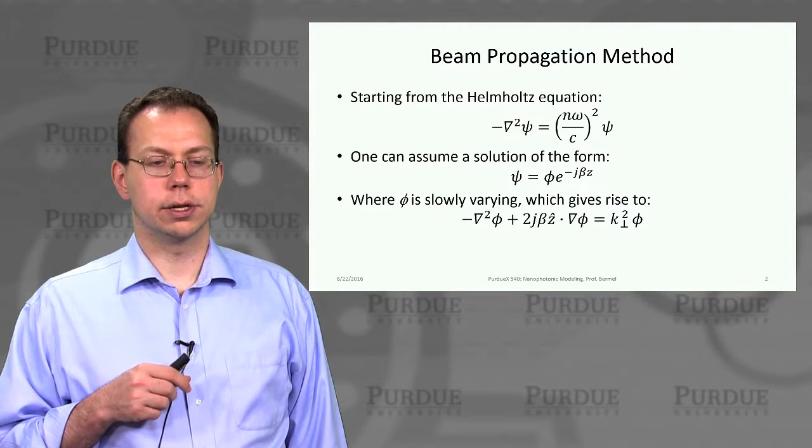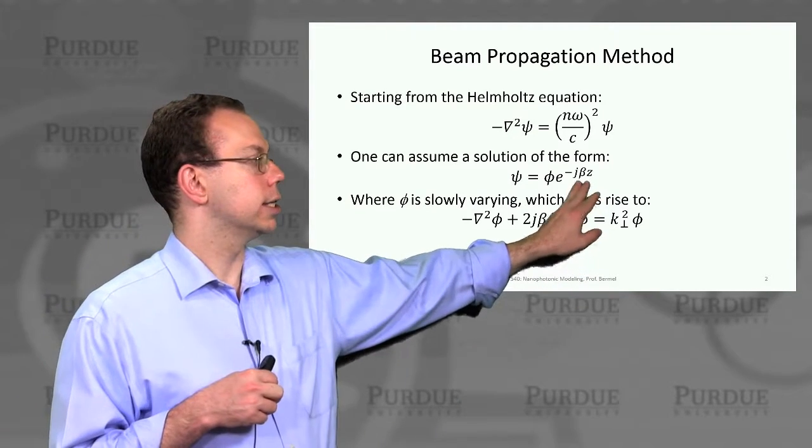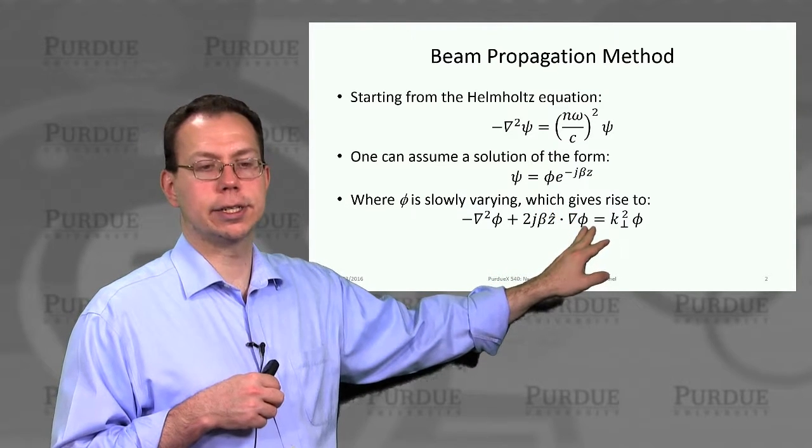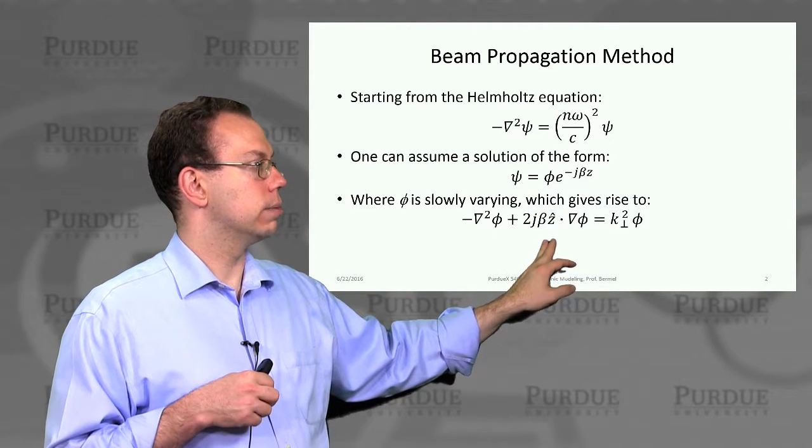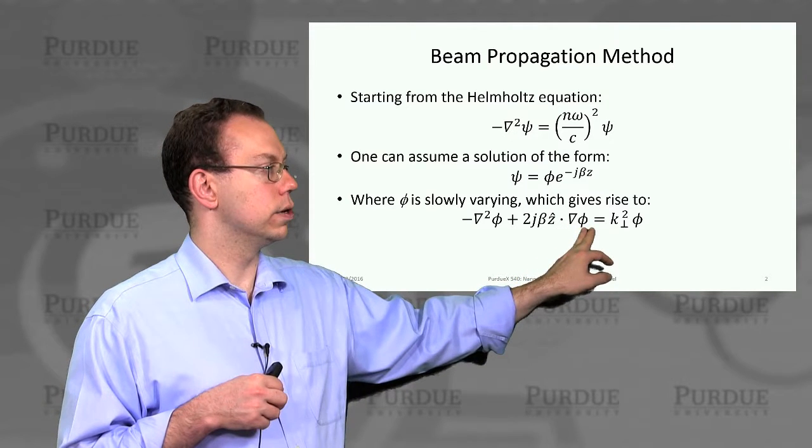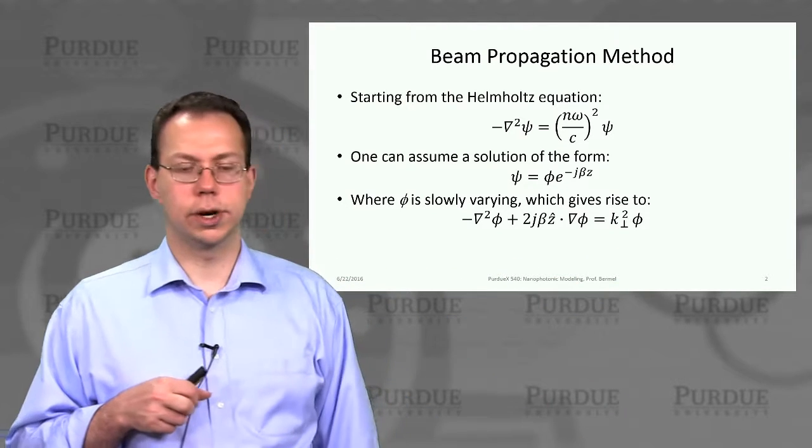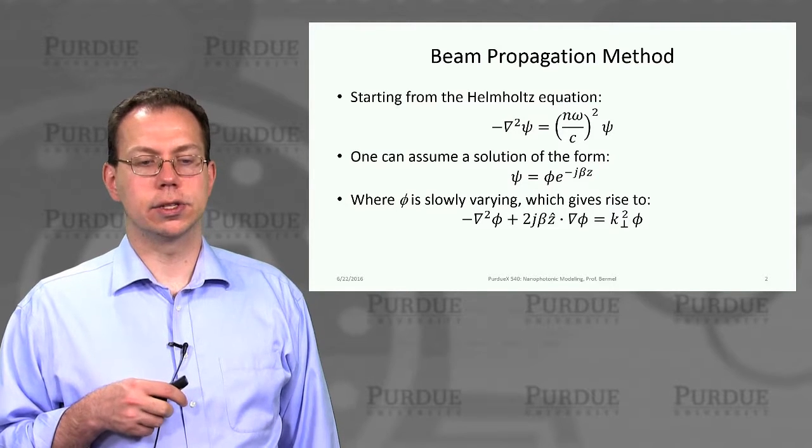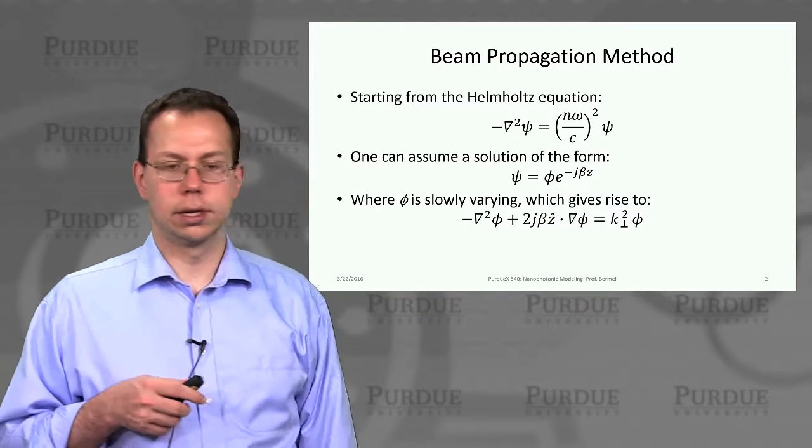Those two terms can be factored out. You can substitute this into the Helmholtz equation and do the math—I'll leave that as an exercise. You can prove that you get minus Laplacian of phi, and a term associated with beta that looks like 2j beta z hat dotted into gradient of phi equals k perpendicular squared times psi. K perpendicular squared psi is closely related to n omega over c squared minus beta squared.